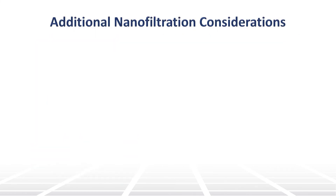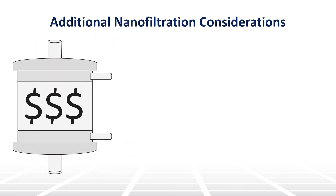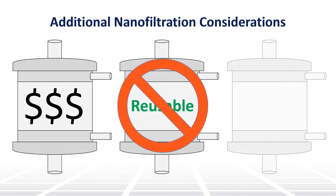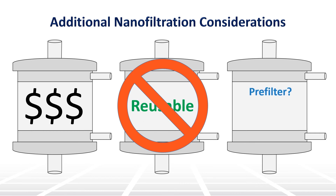Nano filters are expensive, cannot be reused, and are susceptible to clogging. So a pre-filter is often used to clarify the starting material to optimize performance. In addition, if performance of the filter falters, breakthrough of virus can occur, so understanding the conditions that impact breakthrough is paramount.